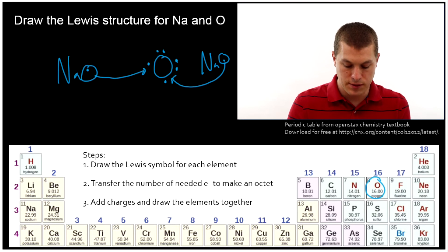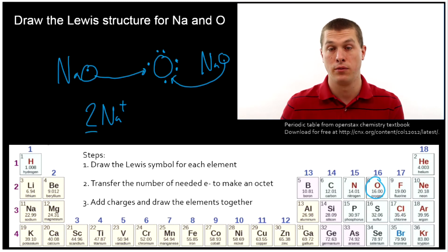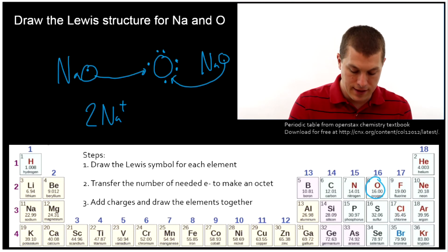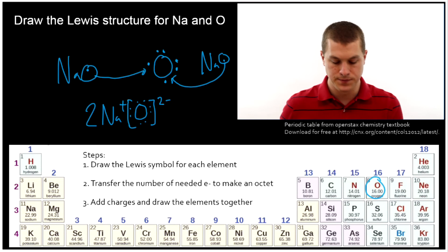So that means that our Lewis symbol then is going to be two sodium plus. And notice I put the two up front here for the Lewis structure, not down below. Basically what I'm saying there is there's two separate sodium pluses. And then oxygen is going to be in brackets once again because it has the electrons and it's two minus. So that is the Lewis structure for sodium oxide.